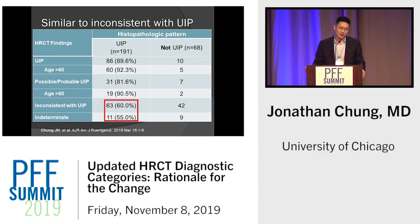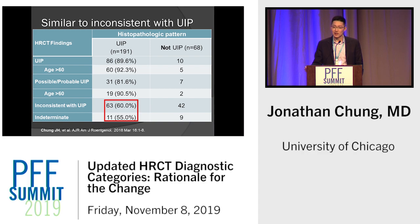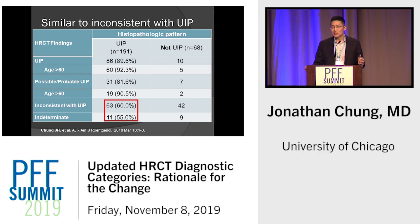University of Chicago data shows that in patients scored as indeterminate for UIP on HRCT, the pathological yield follows very closely with the former inconsistent with UIP pattern — just over half had UIP on pathology. Patients with probable UIP pattern had around 90% diagnostic yield, similar to the classic UIP pattern, especially in patients older than 60. This suggests it wouldn't make sense to combine indeterminate UIP with probable UIP; rather, the logical simplification would be to combine indeterminate with the alternative non-IPF category, and combine probable UIP with the classic UIP category.